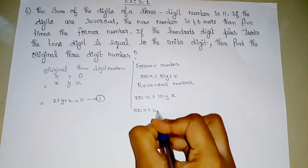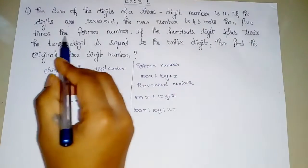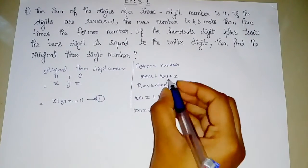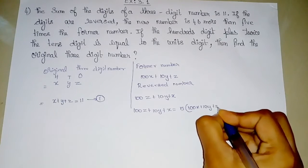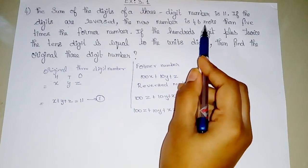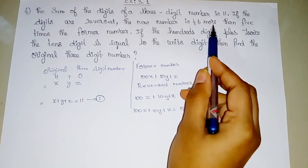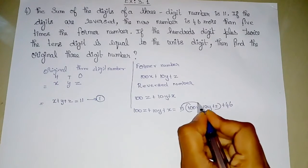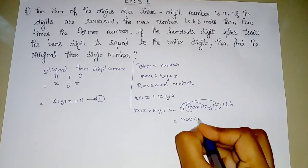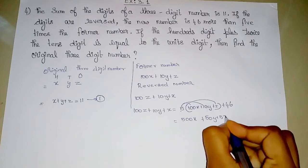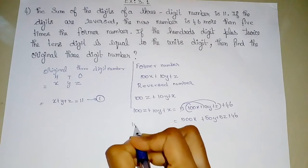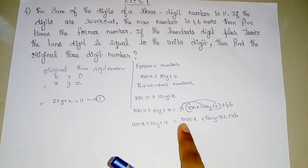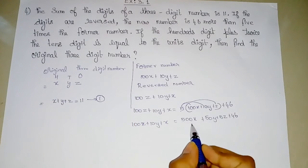So 100Z plus 10Y plus X equals 5 times the former number plus 46. That is, 100Z plus 10Y plus X equals 5 times (100X plus 10Y plus Z) plus 46, which gives us 100Z plus 10Y plus X equals 500X plus 50Y plus 5Z plus 46.